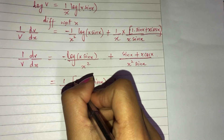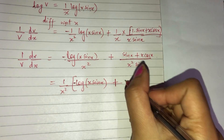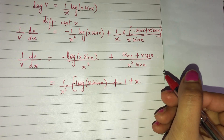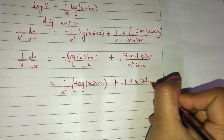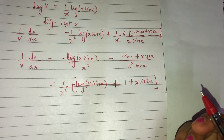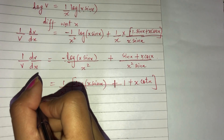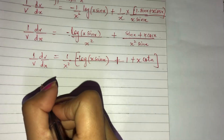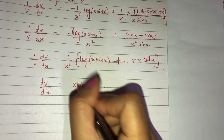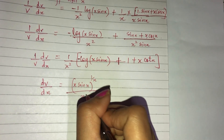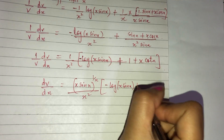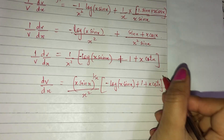After simplification: sin/sin = 1, and x·cos/sin = x·cot x. So (1/v)·dv/dx = −log(x·sin x)/x² + 1/x·[1 + x·cot x]. Therefore dv/dx = v·[1/x²]·[1 + x·cot x − log(x·sin x)], where v = x·sin(x)^(1/x).